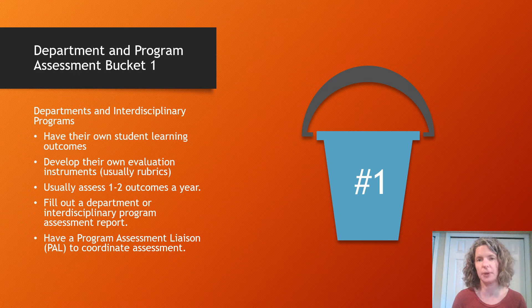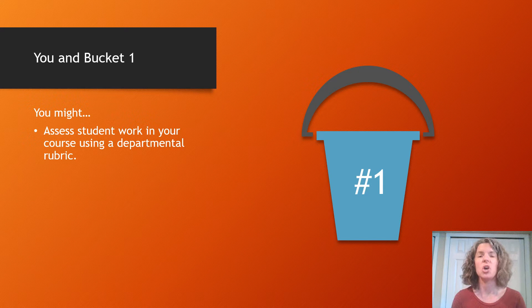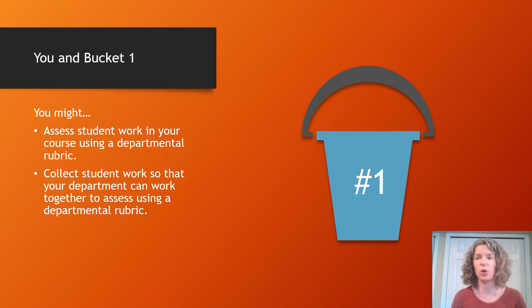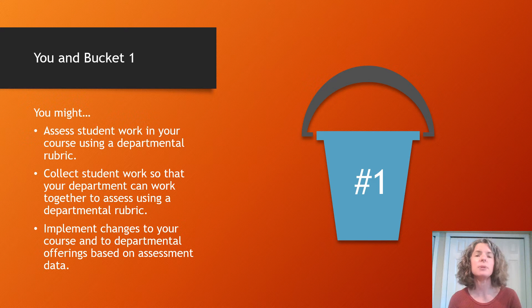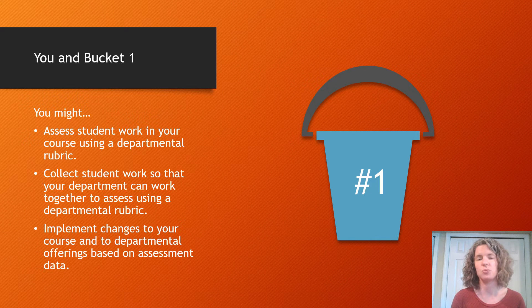What might you do in bucket one? You might be asked to assess student work in your course using a rubric the department has created — the department would hand you a rubric and, while you're doing your own evaluation of a student assignment, you'd also gauge how students do against the department rubric. Or your department might ask you to collect student work and give it to the people who will use the rubric to assess learning, or you might be part of a group that assesses student work from across the department. You might also be asked to implement changes to your course based on what the department learned — for example, if a department looking at senior theses decides they need more work at the 100 and 200 levels on reading primary sources, you might be asked to work more on primary source reading with your students.